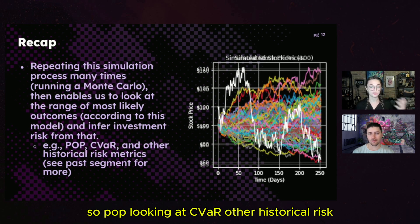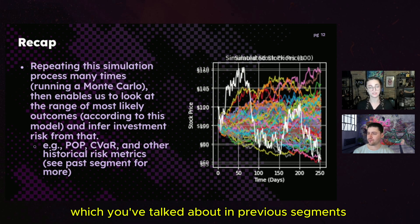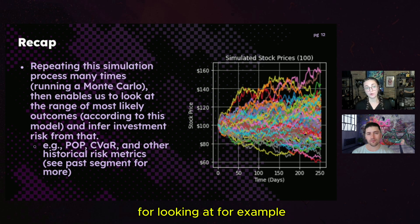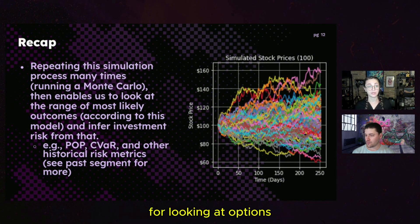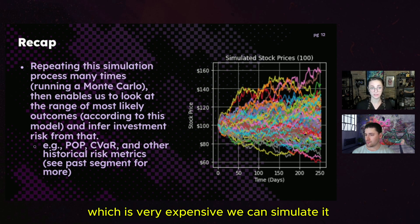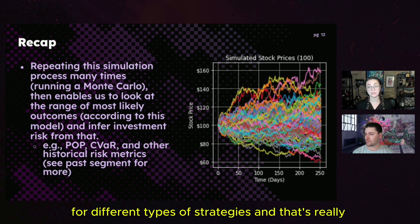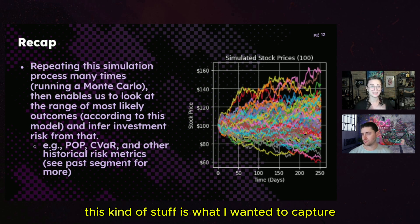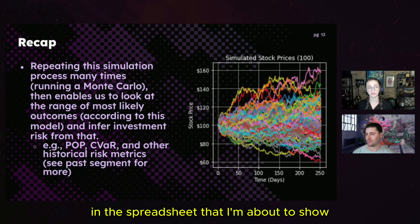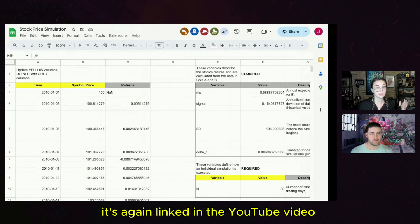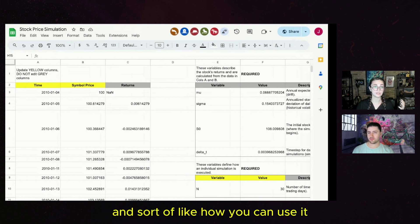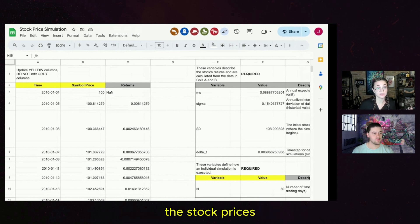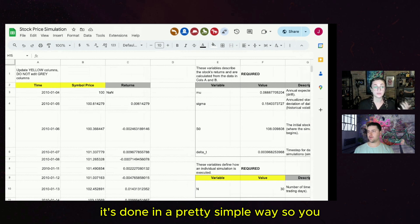Looking at CVaR and other historical risk metrics, this can be a very useful tool for more complex portfolios — different portfolio weights, options and their possible distributions (especially when you don't have access to expensive historical options data), and different types of strategies. That's really what I wanted to capture in the spreadsheet I'm about to show. It's important to note that the way we're simulating stock prices is done in a pretty simple way, so you've got to take it with a grain of salt.